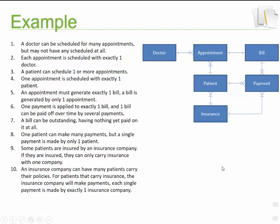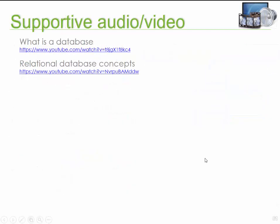So what we have in front of us is a simple ERD diagram. We could have extended this by bringing in a database schema where we would have indicated the attributes that might be present in each one of these six entities. So that concludes our discussion about databases.